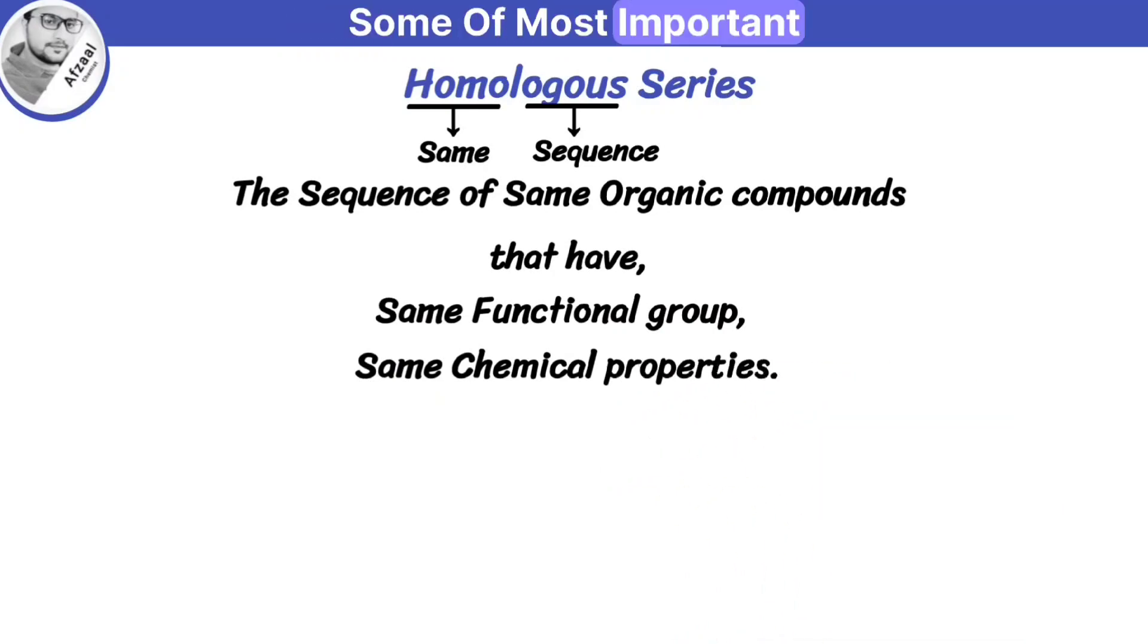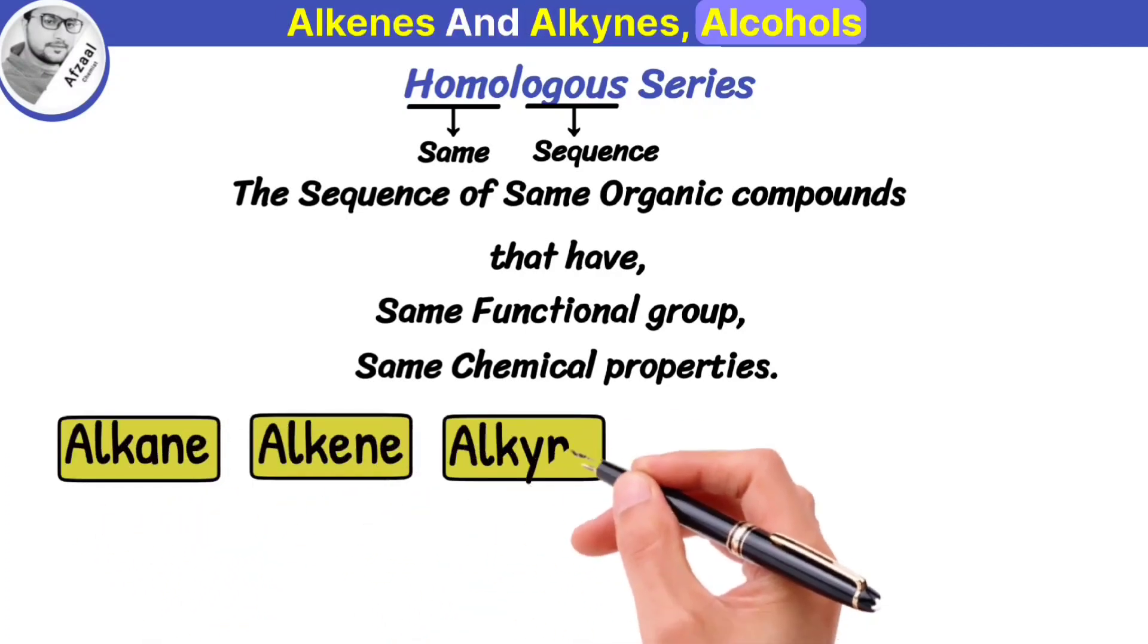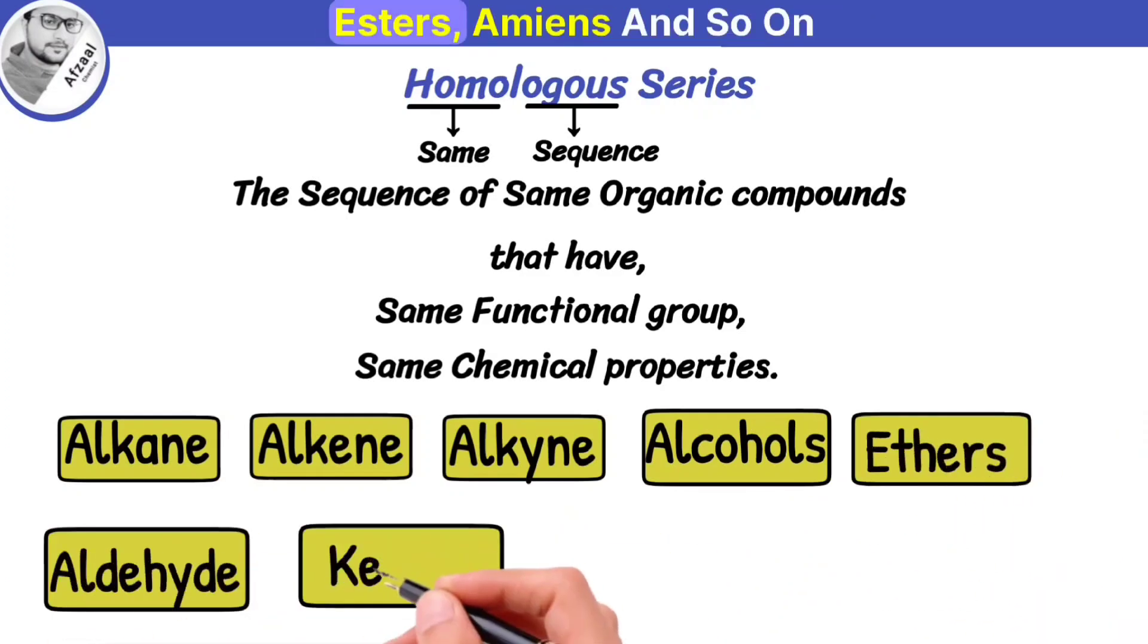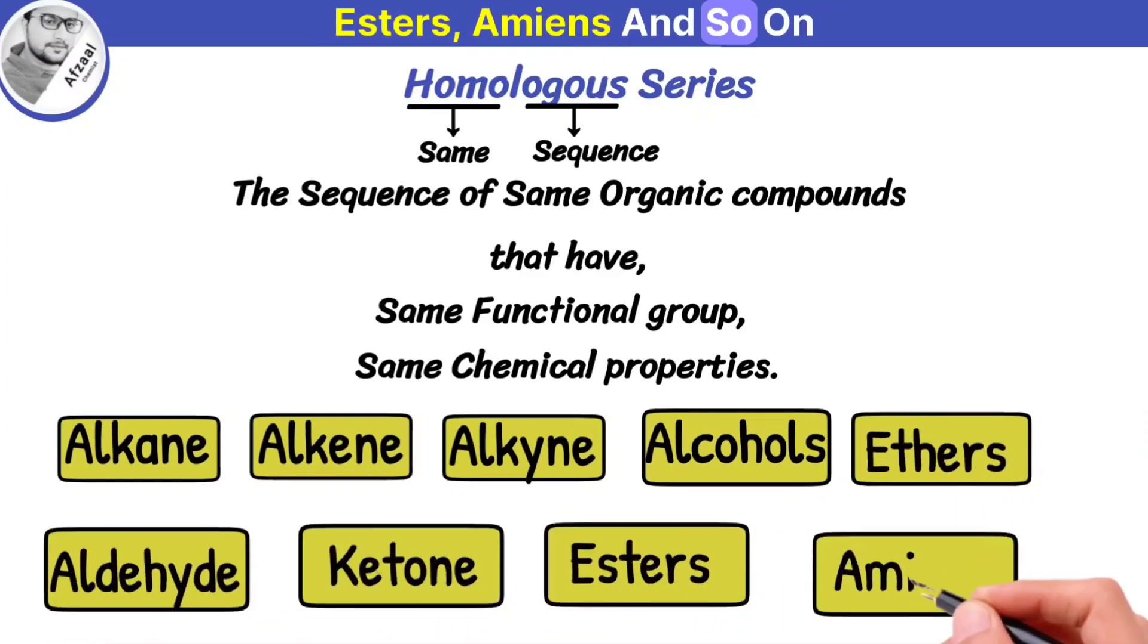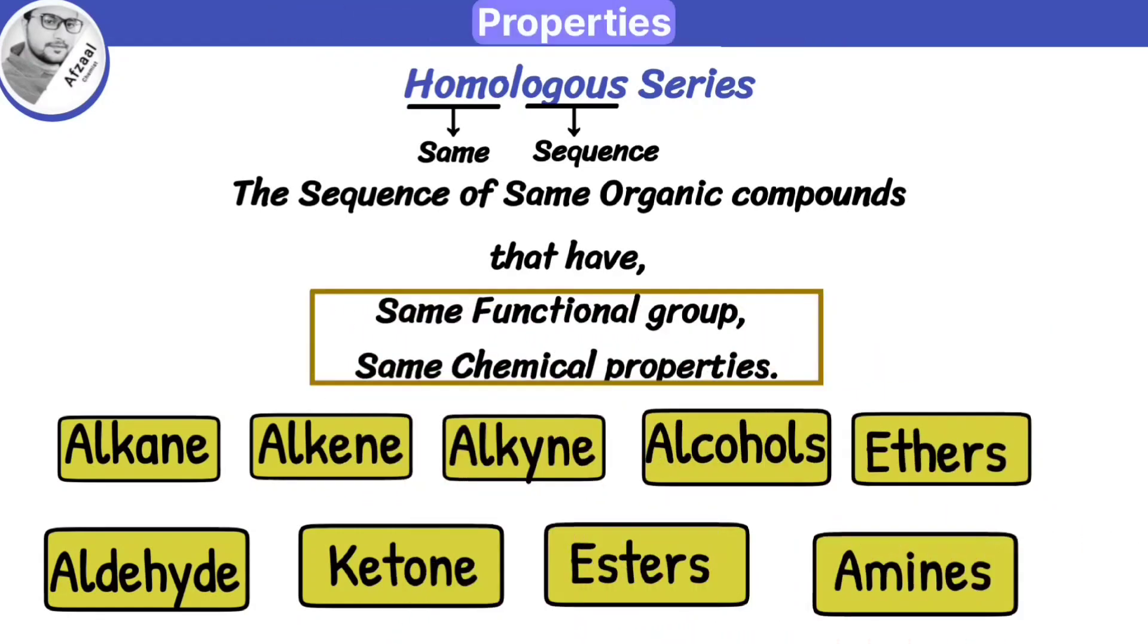Some of the most important homologous series are alkanes, alkenes, and alkynes, alcohols, ethers, aldehydes, ketones, esters, amines, and so on. All the members of these series have the same functional group and the same chemical properties.